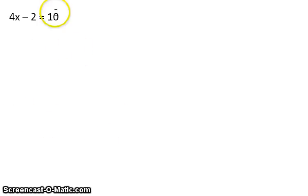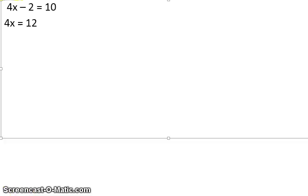Now let's move to a harder equation. First we need to get the 4x by itself, so we add 2 to each side which gives us 4x = 12. Then we divide by 4, and that gives us x = 3.